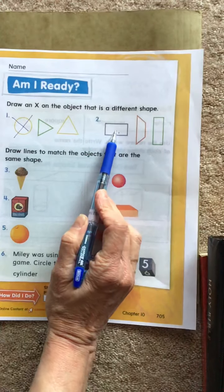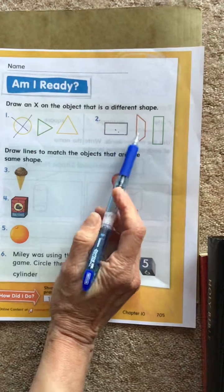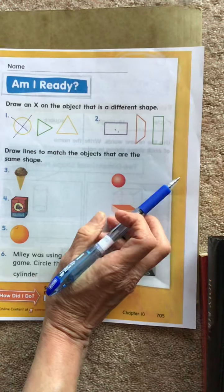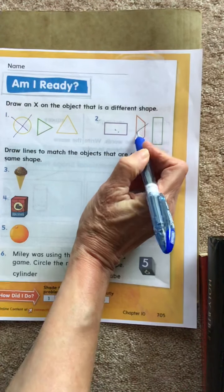This one, you've got these three, which one's different? Trapezoid, okay.